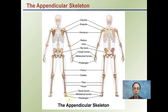Again, all these bones, at minimum, you should be able to identify. This is just a quick overview of the axial and appendicular skeleton, with other videos to provide more details on the different regions within these skeletons.